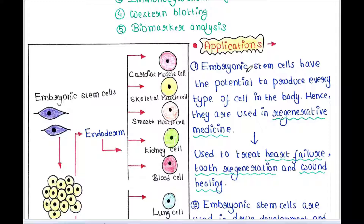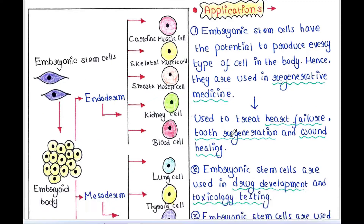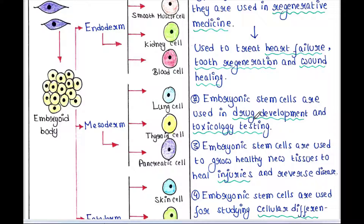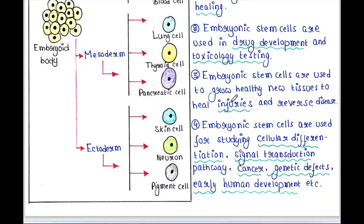Embryonic stem cells have the potential to produce every type of cell in the body. They are used in regenerative medicine to treat heart failure, tooth degeneration, and bone healing. They are also used in drug development and toxicology testing, to grow healthy new tissues to heal injuries and reverse disease, and for studying cellular differentiation, signal transduction pathways, cancer, genetic defects, and early human development.